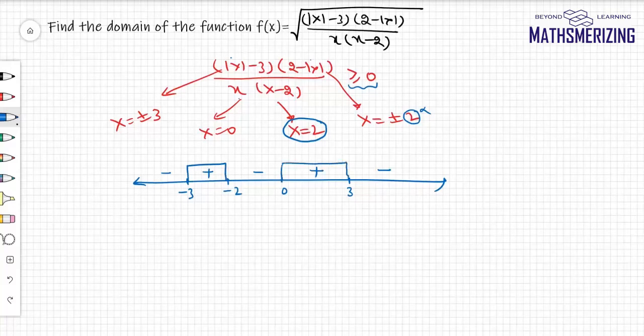Now because there is an equality sign, I have to include roots of the numerator. So roots of the numerator are plus 3 and minus 3 and minus 2, and I have to exclude roots of the denominator. Roots of the denominator are 0 and then 2.